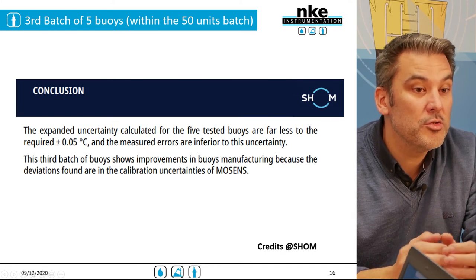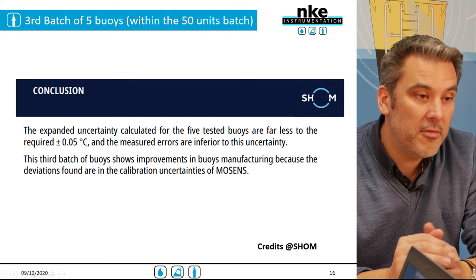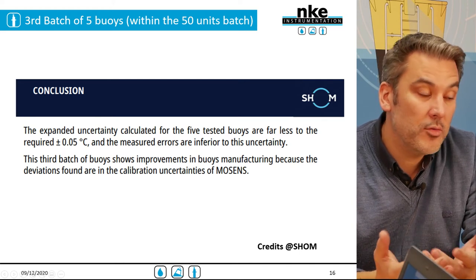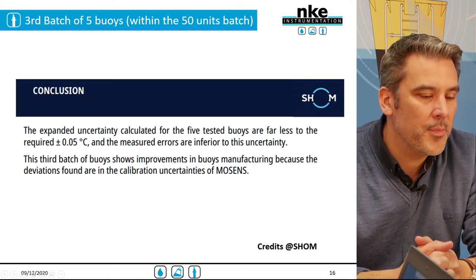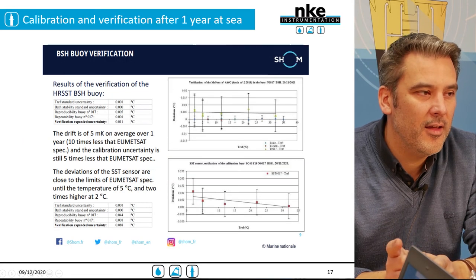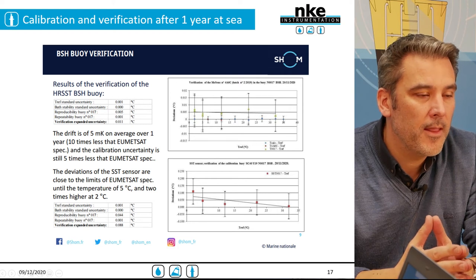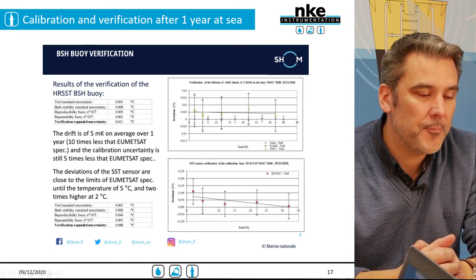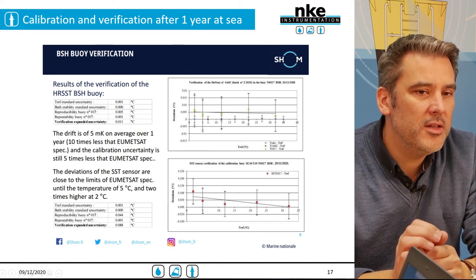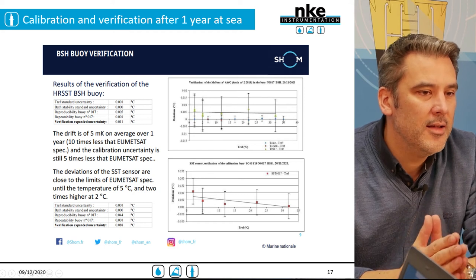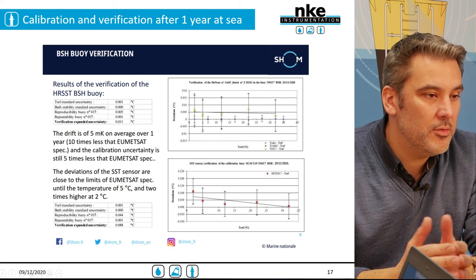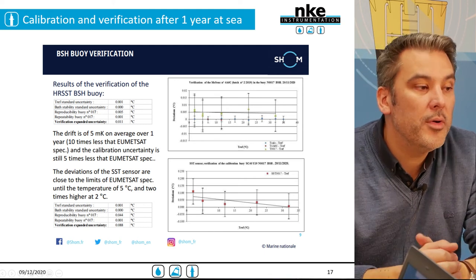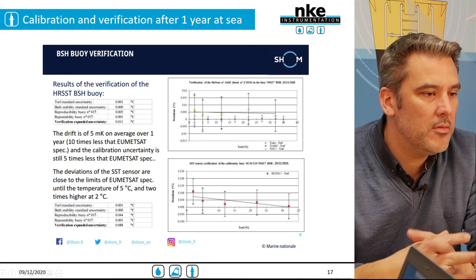The buoy verification also showed that expanded uncertainties are far less than the required plus or minus 0.05 degrees Celsius, confirming increasing performance during the manufacturing process. To further illustrate performance at sea, results from the verification of one buoy that was deployed for approximately one year show a very limited drift — ten times less than the specification. This clearly means the sensor behaves well, and continues to perform well even after one year of deployment.